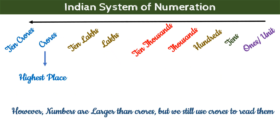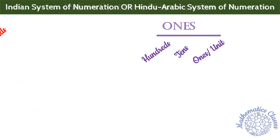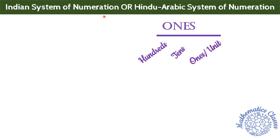We read numbers either in the Indian system or in the International system. We will talk first about the Indian System of Numeration. In the Indian system of numeration, the biggest place for larger numbers is only in Crores. Numbers can be much larger, लेकिन हम फिर भी Crore का ही use करेंगे numbers को read करने में। Indian System of Numeration is also known as the Hindu-Arabic System of Numeration. Indian system of numeration में हम different places को एक group में रखते हैं, जिसे हम Period बोलते हैं।